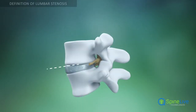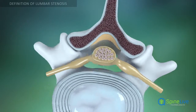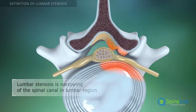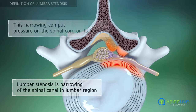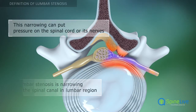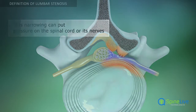Lumbar spinal stenosis is a condition that occurs when the spaces in your backbone become narrow. When this happens, your spinal cord and its nerves can become compressed or pinched.